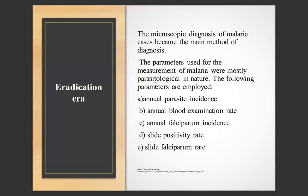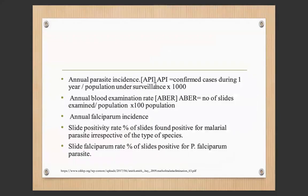In the eradication era, microscopic diagnosis of malaria cases became the main method. Parameters used for measurement were mostly parasitological: Annual Parasite Incidence (API) — confirmed cases during one year per population under surveillance per 1,000; Annual Blood Examination Rate — number of slides examined per population per 1,000; Annual Falciparum Incidence; Slide Positivity Rate — percentage of slides positive for malaria parasite irrespective of species; and Slide Falciparum Rate — percentage of slide positives for P. falciparum.